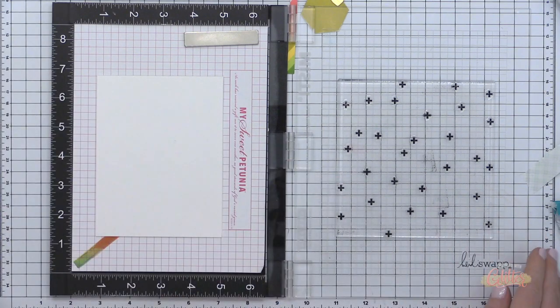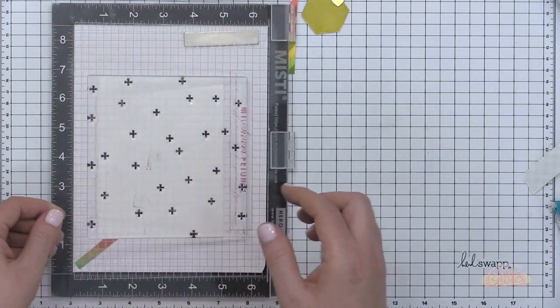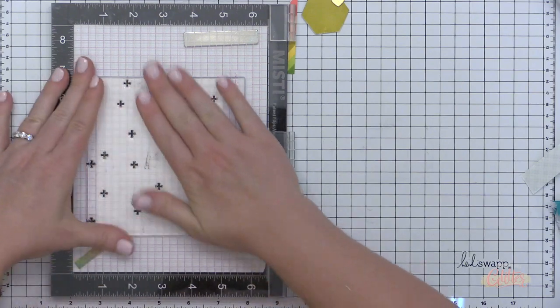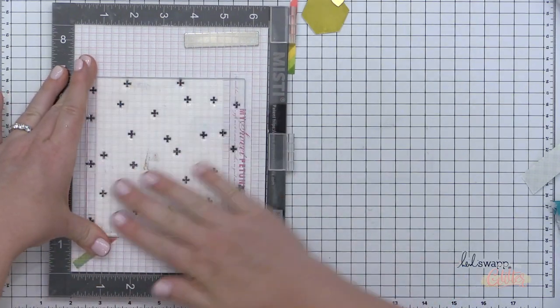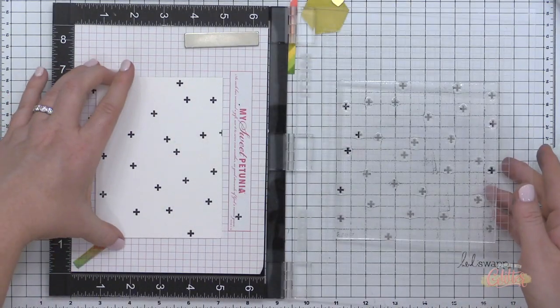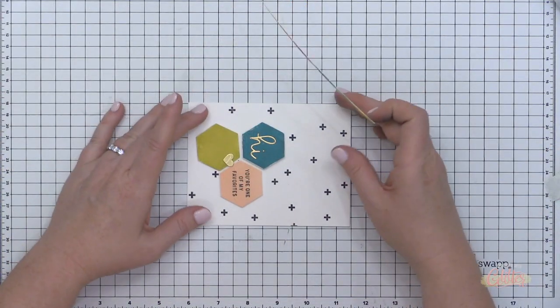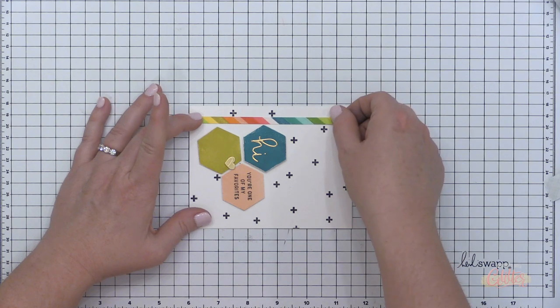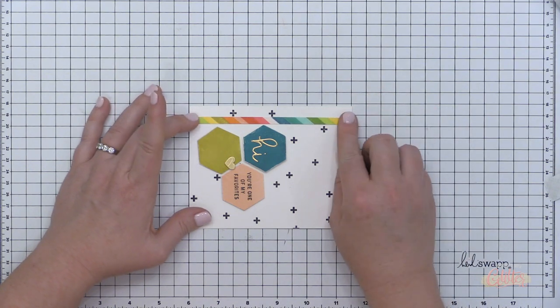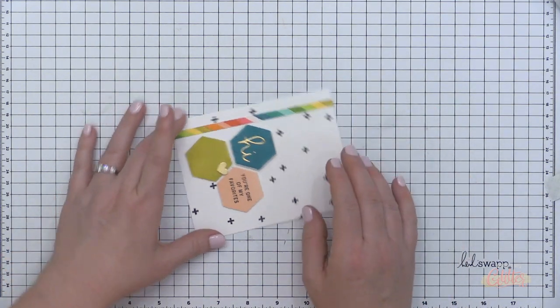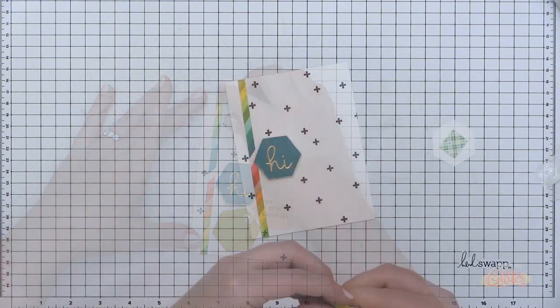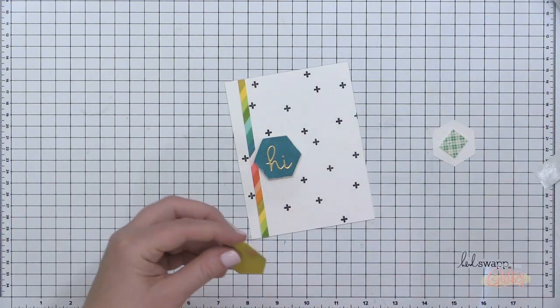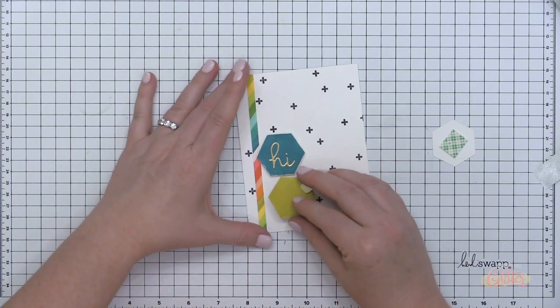For my second card I'm going to use a lot of the same colors and the same kind of general idea, but my card base I'm going to stamp a pattern on it using the Positive Print Turnabout stamp set from Concord & Ninth. I just stamped that onto my card base using some black ink.